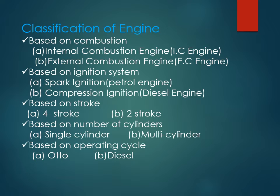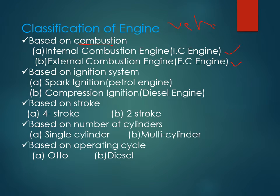Based on different criteria, we have different types of engines. If we consider the combustion process: if inside the engine the fuel is burned, then it is called an internal combustion engine. If it is burned outside the engine, then it is called an external combustion engine — like a gas turbine. If we consider the ignition system — the process by which the fuel is going to burn is known as the ignition system.